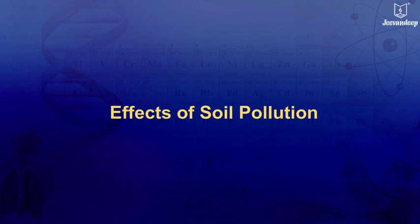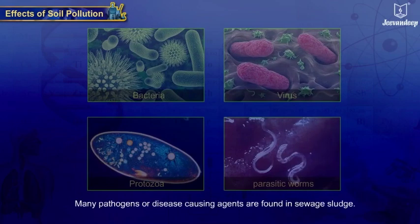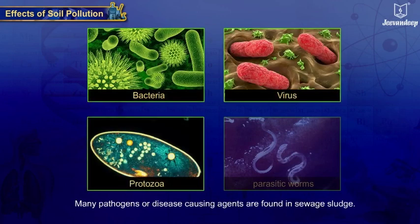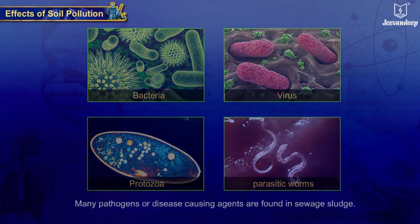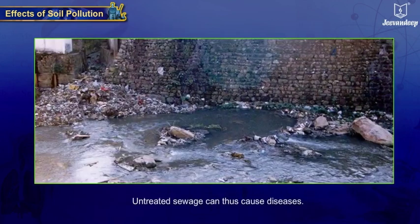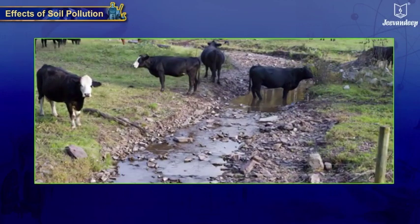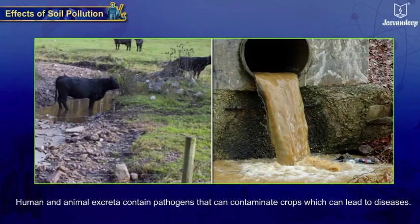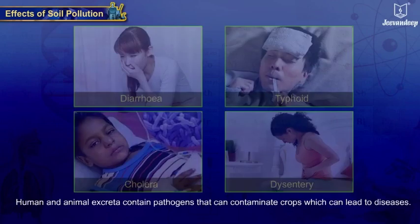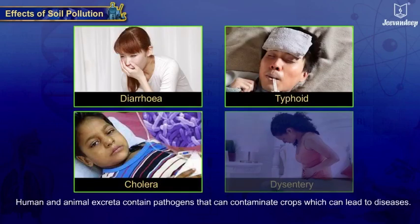Effects of soil pollution: Many pathogens or disease-causing agents, such as bacteria, viruses, protozoa, and parasitic worms, are found in sewage sludge. Untreated sewage can thus cause diseases. Animal excreta is used as manure in fields; human excreta also finds its way to soil. Both human and animal excreta contain pathogens that can contaminate crops, which can lead to diarrhea, typhoid, cholera, and dysentery.